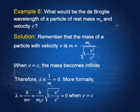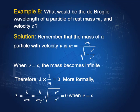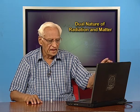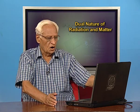What would be the de Broglie wavelength of a particle of rest mass m₀ and velocity c? Such a particle is a photon. The momentum of the photon is known, and formally lambda = h/mv where m = m₀ divided by square root of (1 − v²/c²). At v equal to c, the denominator becomes 0, so lambda is 0. The de Broglie wavelength of a photon is zero.